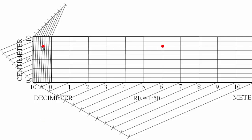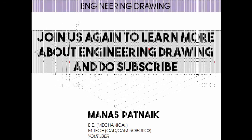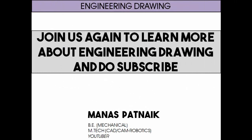The second distance is 11.14 meters. This line is benchmarked for 11 meters. Then 0.1, 0.11, 0.12, 0.13, 0.14 — so that's 11 and 0.14 giving 11.14 meters. That was all from my side.